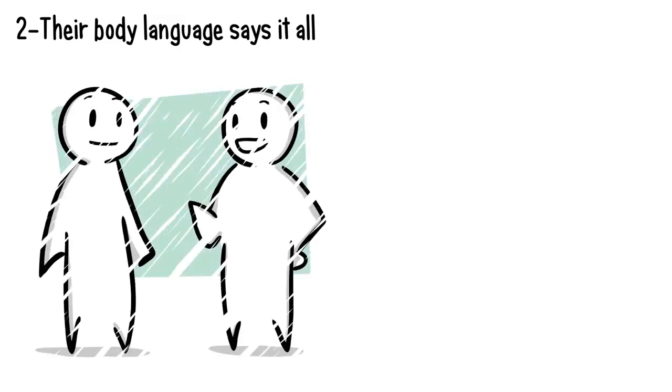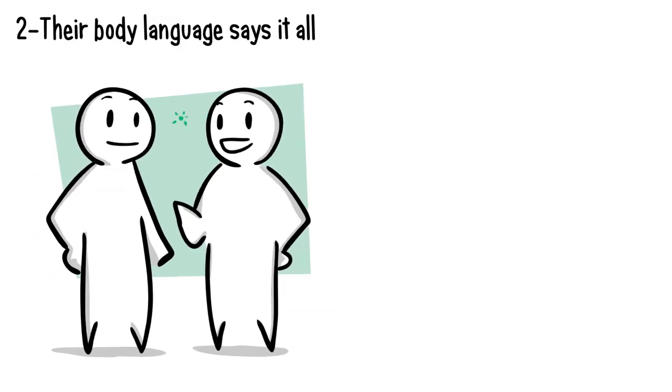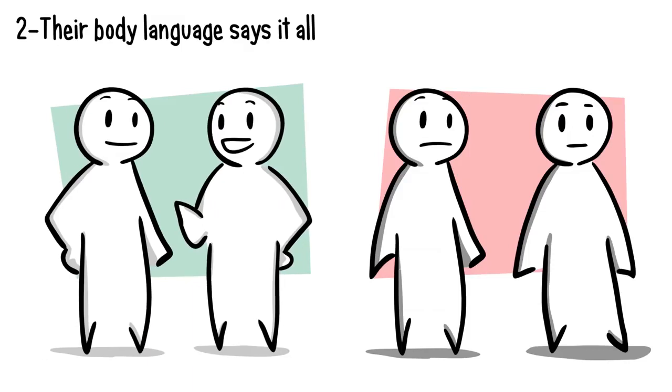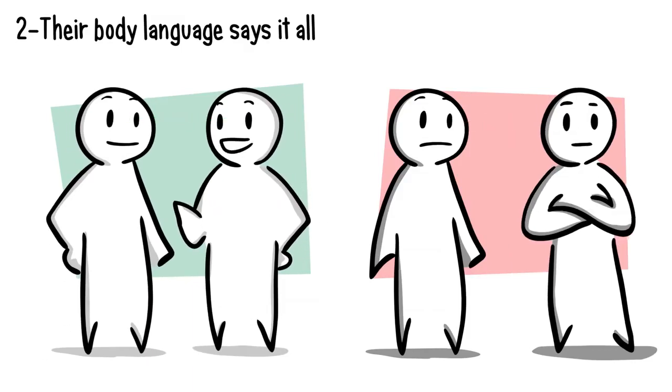Number two: Their body language says it all. When we like someone, we have a tendency to make eye contact, mirror their body language, and lean in closer. But when someone dislikes you, they will avoid eye contact, cross their arms, and lean away from you.